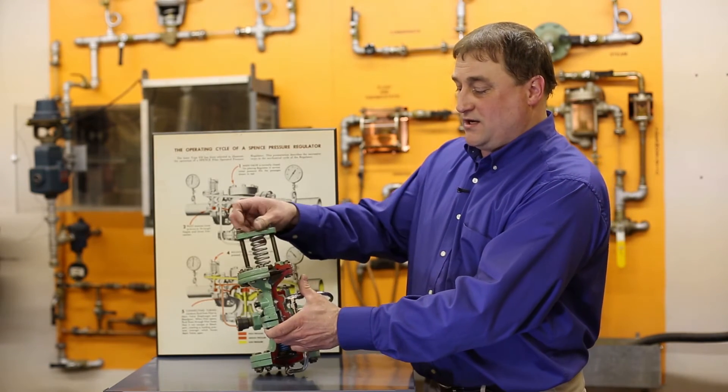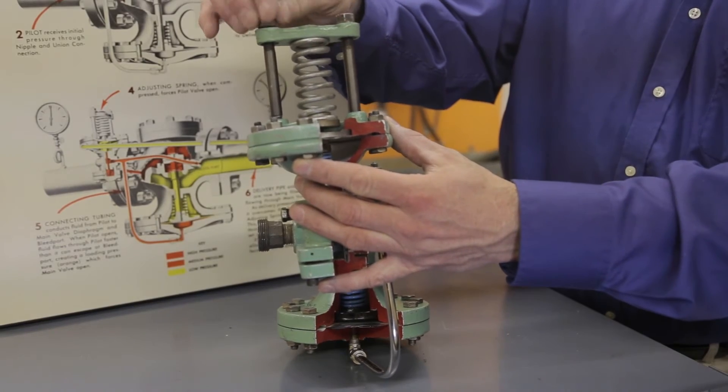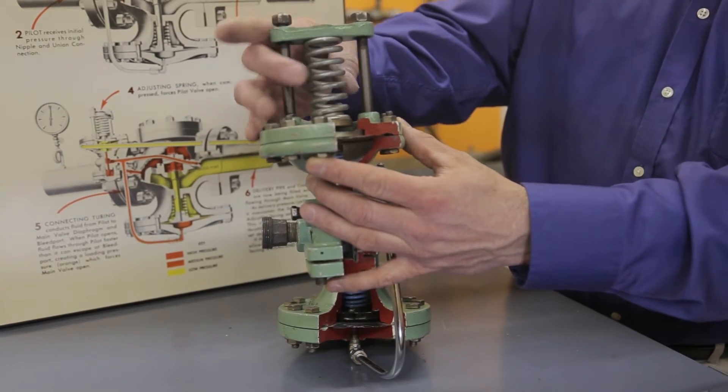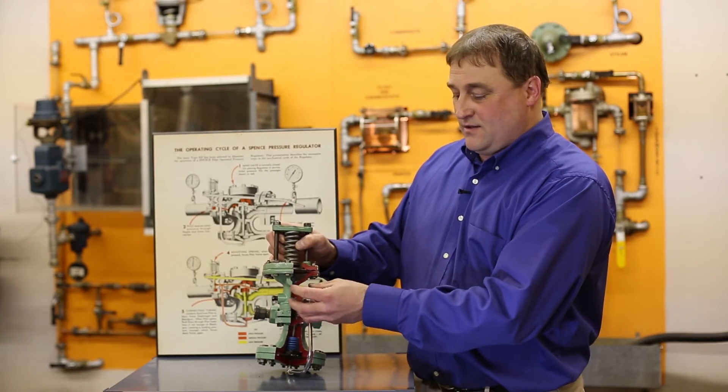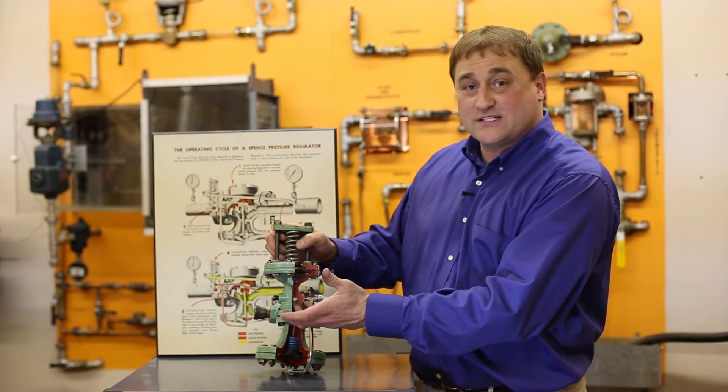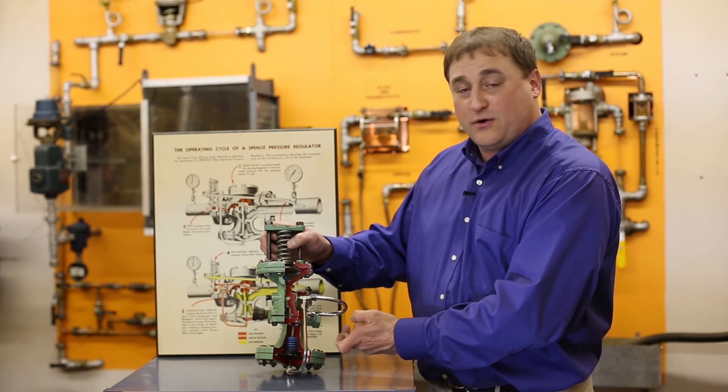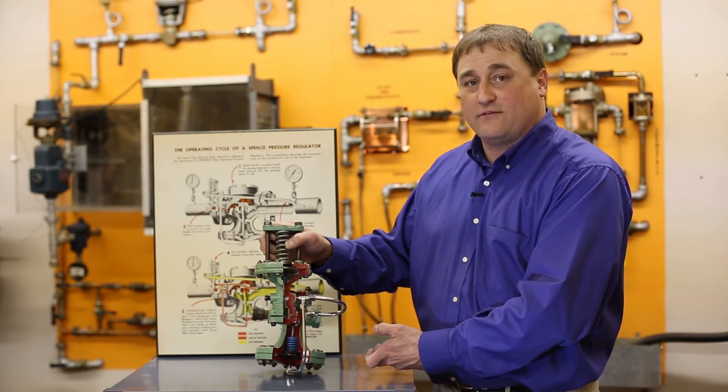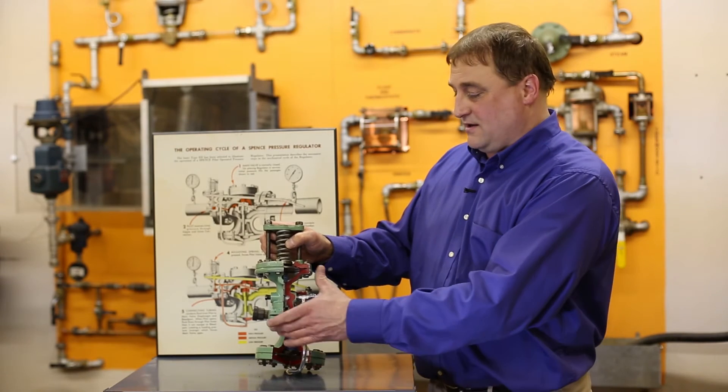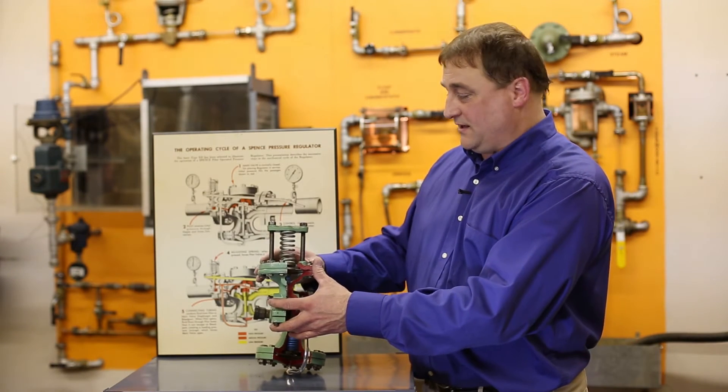When we loosen up the adjustment nuts on top of the pilot, we then relax the spring. The pressure goes down. The pressure inside says that it is now satisfied, and it will allow the pressure to start to reduce and fall off, so we can adjust that pressure as much as we would like.